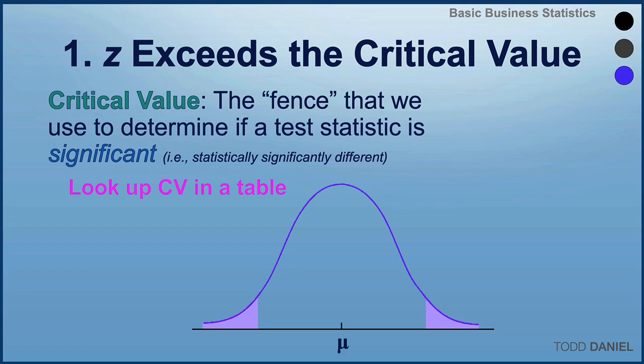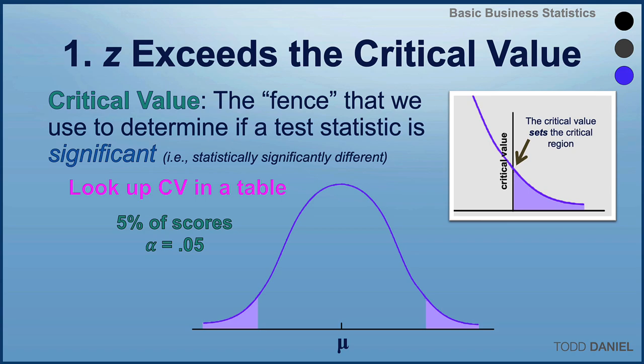The critical value is based on a level of significance, typically 0.05. Therefore the level of significance sets your critical region. The critical region, or region of rejection, demarcates means that are so different, so far away from the population mean, that only less than five percent of the time would we randomly select a sample with that mean if the null hypothesis were true. Because this outcome is so unlikely, we reject the null hypothesis and accept that the means are statistically significantly different.